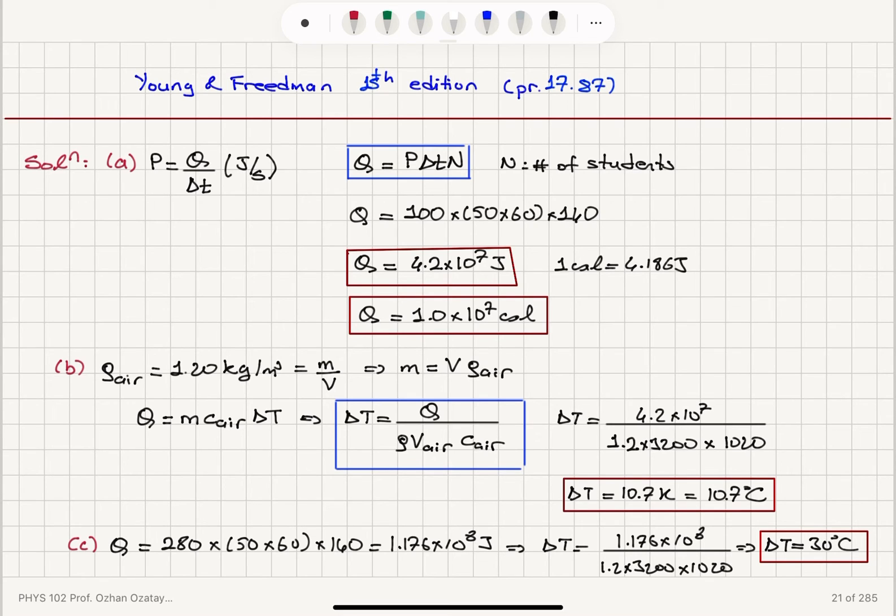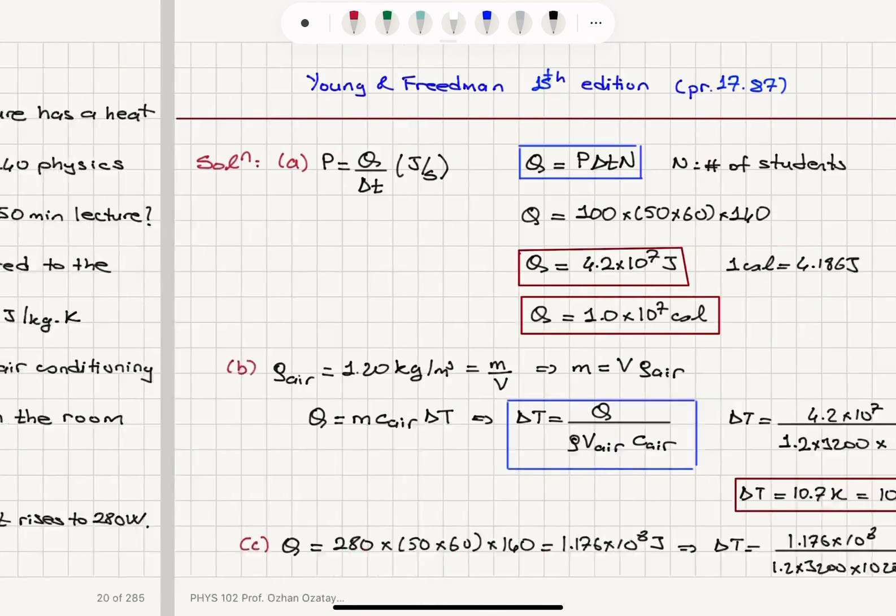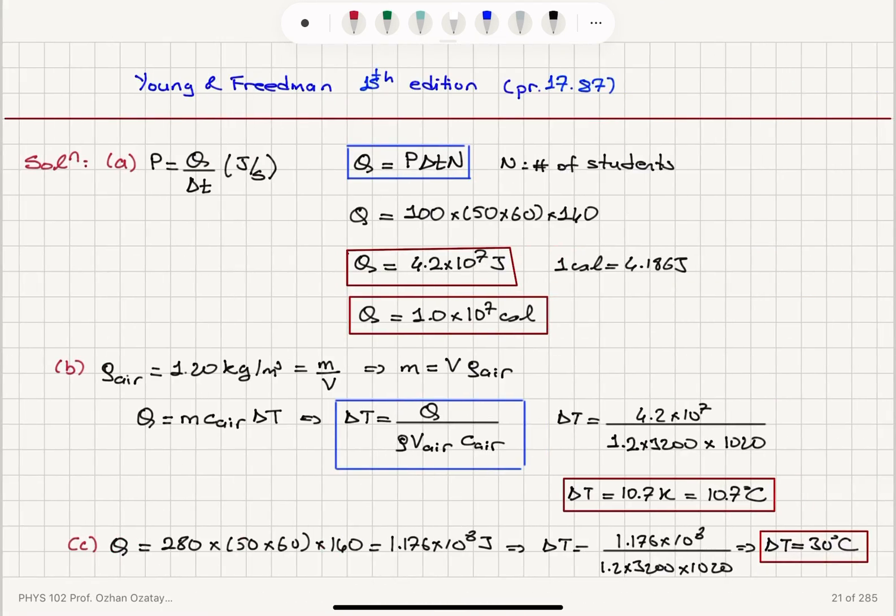The delta T this will cause in the air. We need to know density of air and specific heat of air and the total volume of air in the room. Q is equal to mc delta T because there is no phase change, so delta T is Q divided by rho V air times c air. Plugging in the numbers, we obtain 10.7 degrees Celsius temperature rise.